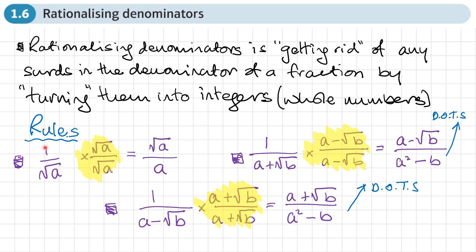We've got three types. The first type is a fraction where in the denominator you've got a single surd. To rationalise this, we multiply the top and the bottom of the fraction by its denominator — the square root, whatever surd is in that denominator. We'll end up with the square root of the number over a whole number. You can see we've ended up with an integer, a whole number in the denominator.